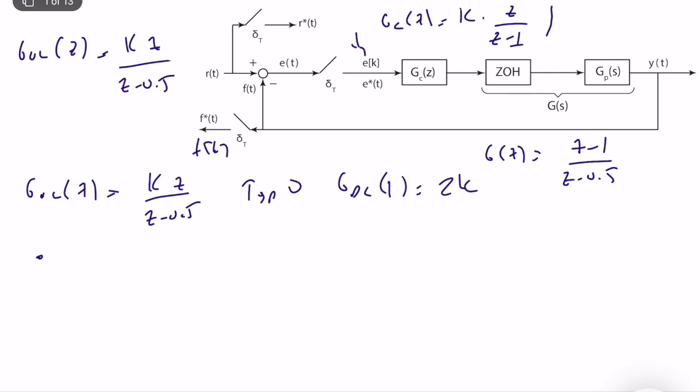The idea is computing steady state error for unit step, unit ramp, and unit acceleration. Since it's a type zero system, the steady state error for unit step is equal to 1 over 1 plus g_dc, which is equal to 2k. As k increases, the steady state error decreases. That's good.